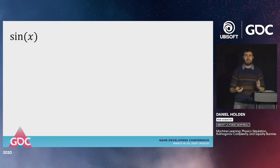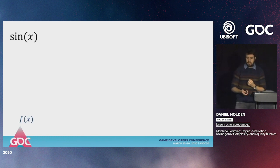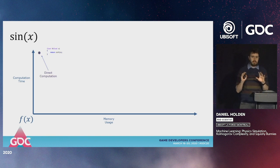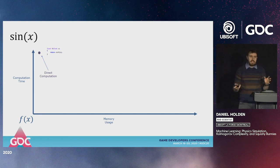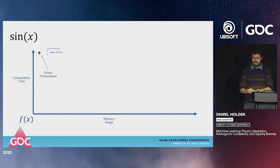Here's a simple example. Let's say we have the sine function. We can think of different implementations in terms of their memory usage and computation time. For example, a normal direct computation of sine uses no memory — it's maybe even implemented in hardware, just a single call.